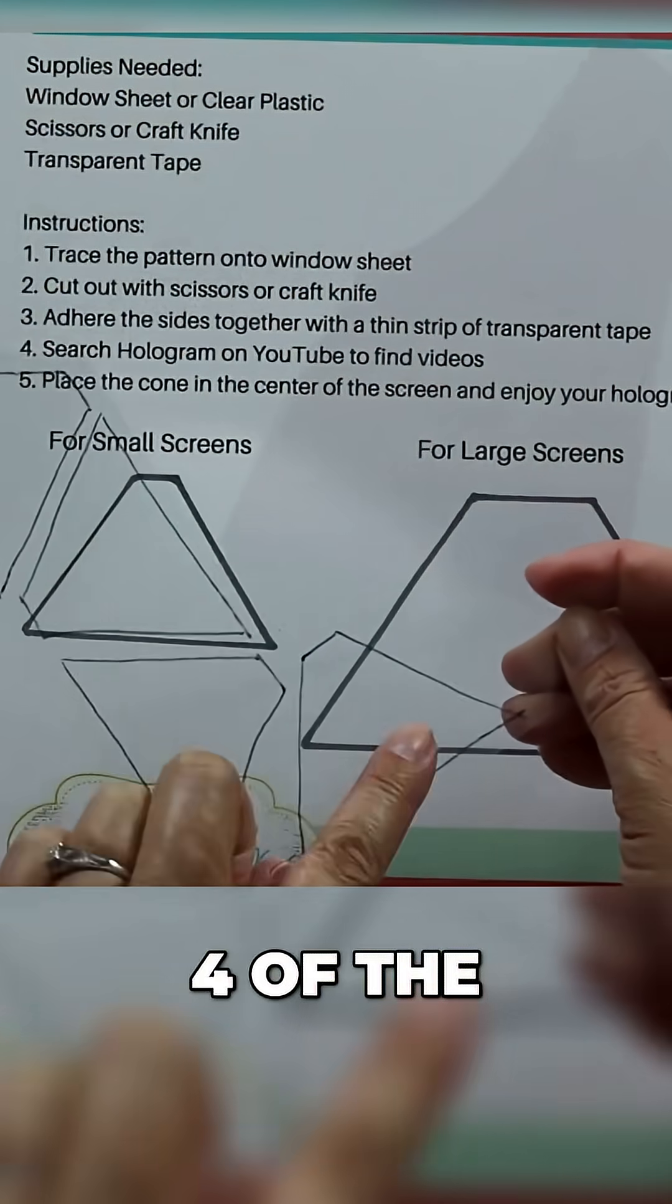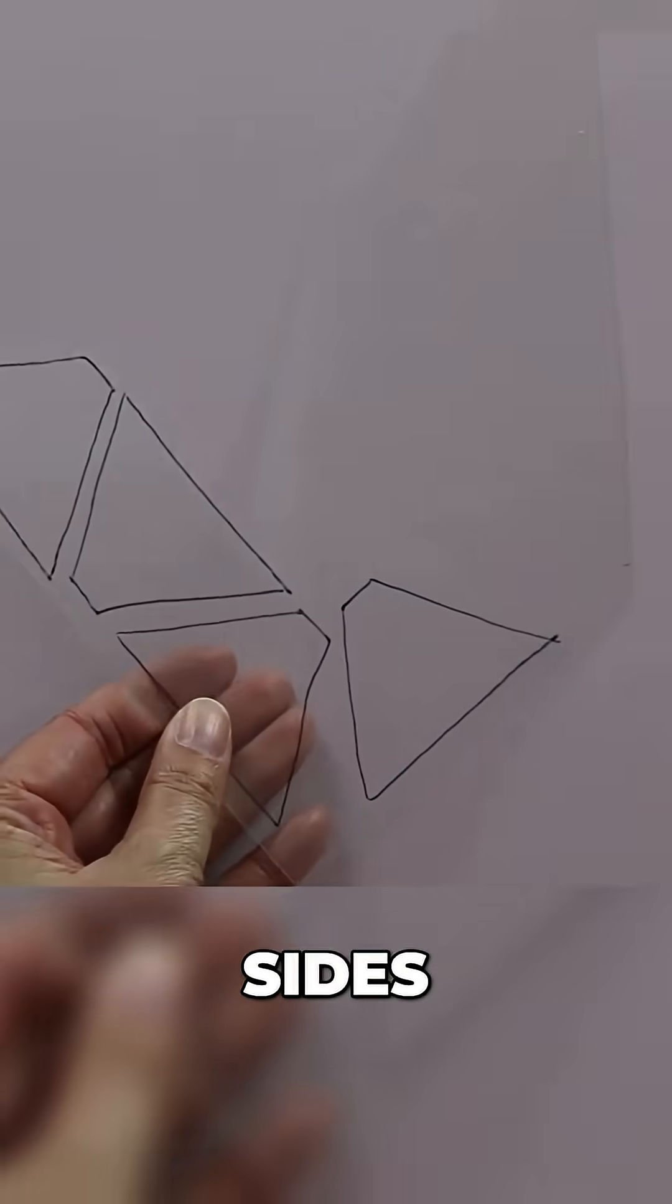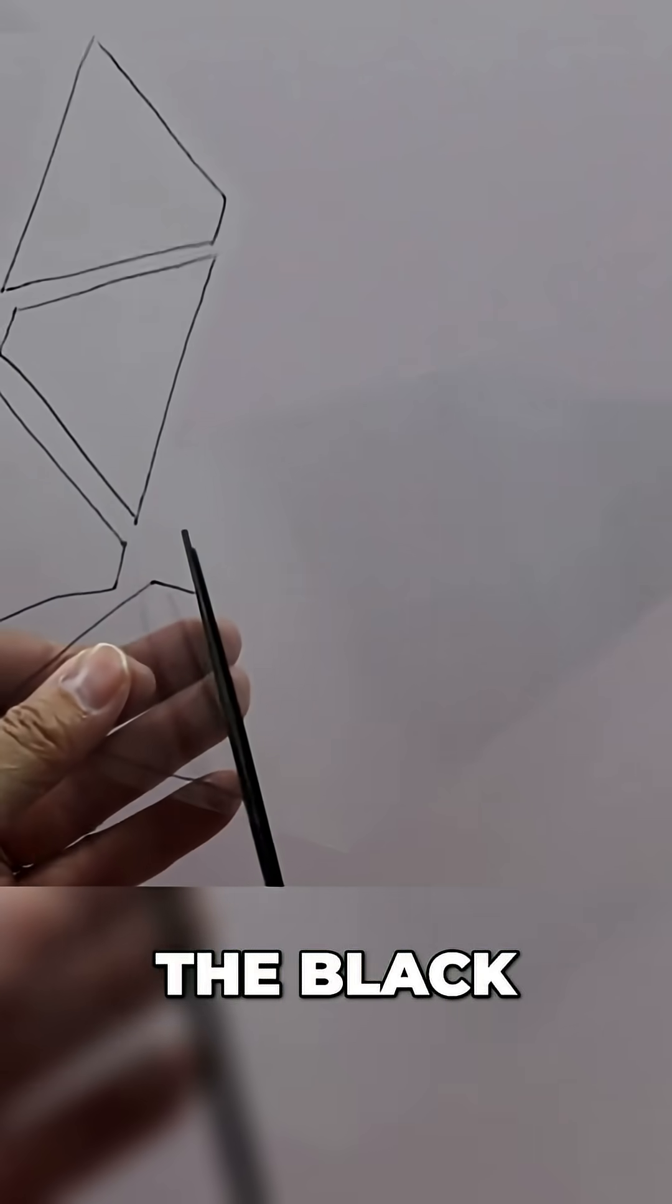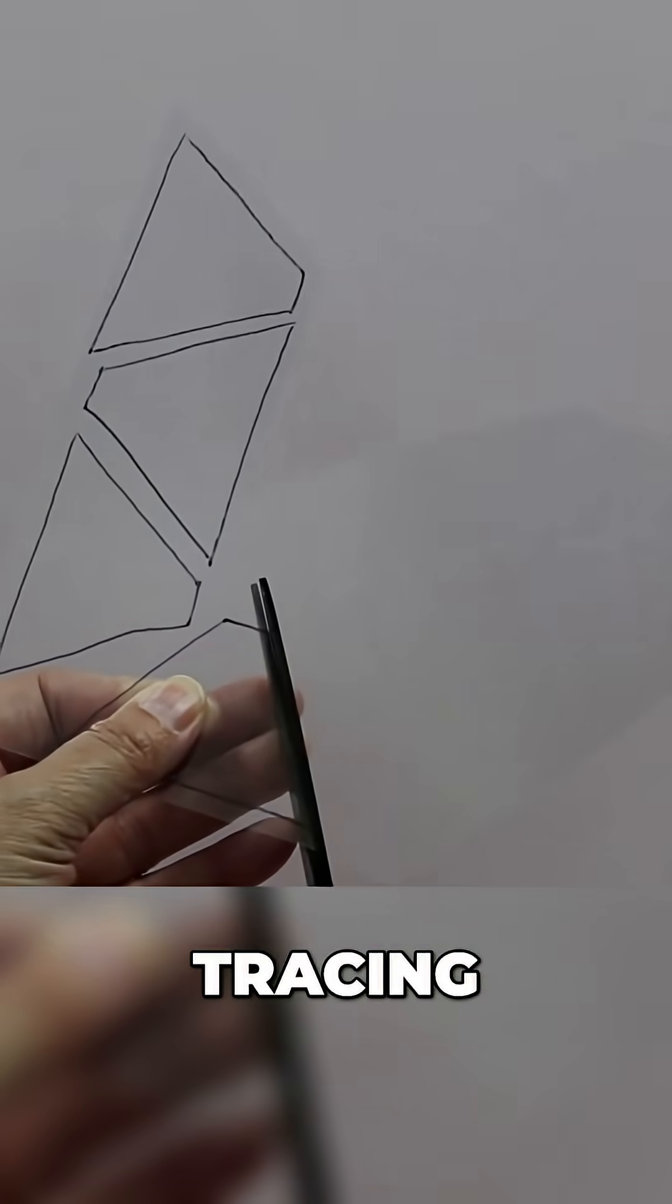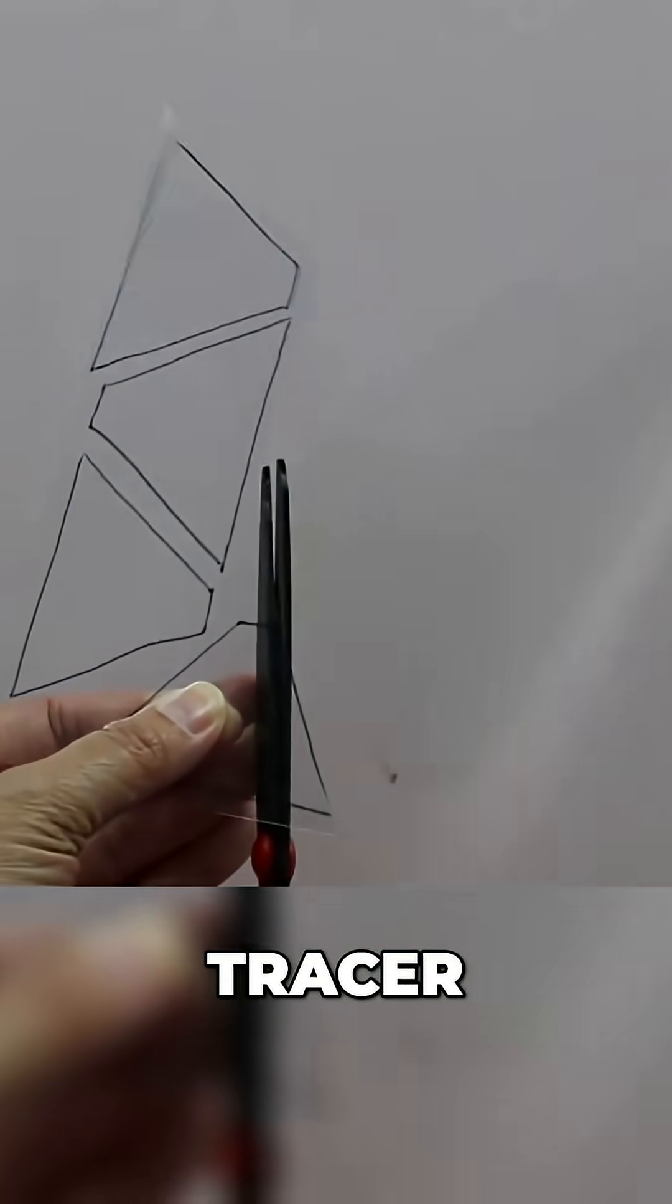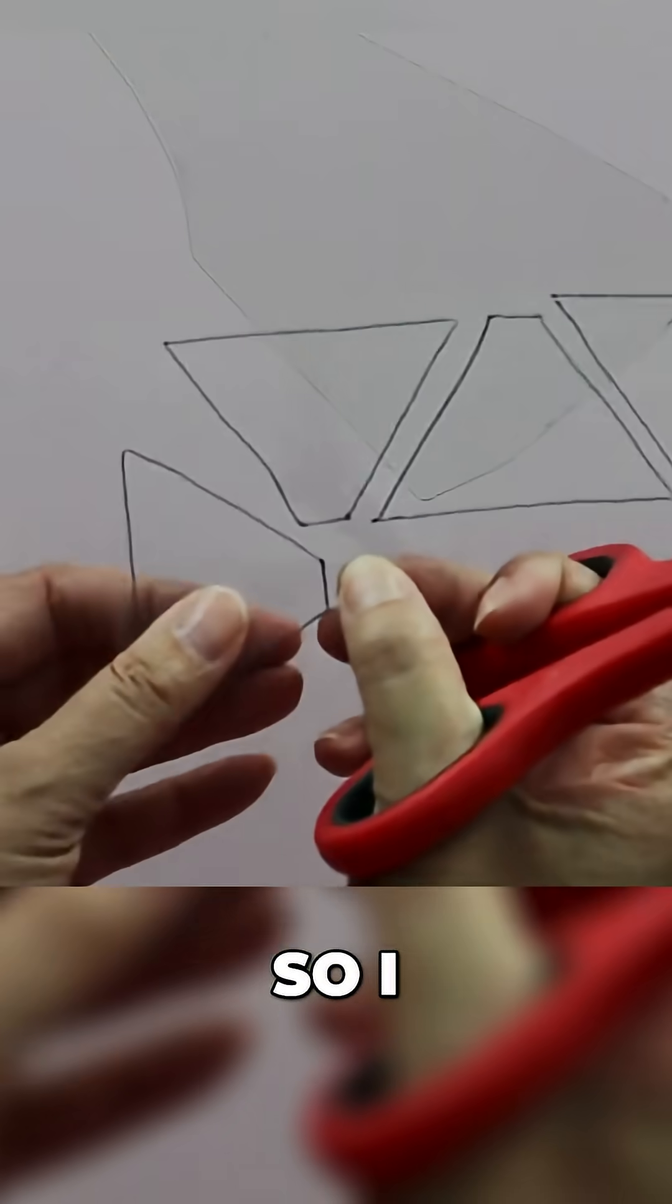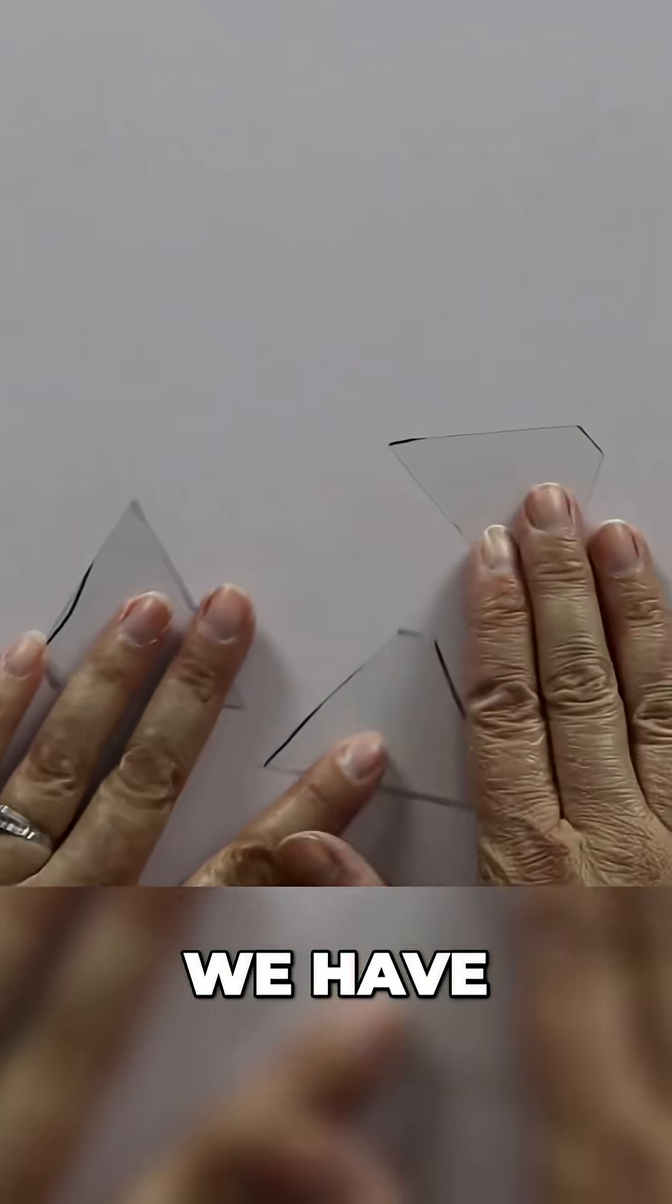I needed to trace four of the same shape because my cone has four sides. Cut those out as close to the black line as possible. A lot of my tracing lines aren't straight. That's because I am a horrible tracer. But I can make those lines straight with my scissors. So I am not that worried about it.